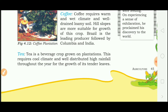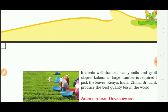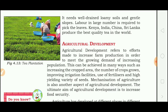Tea is a beverage crop grown on plantation. In India, Assam is famous for tea plantation. Tea requires a cool climate and well-distributed high rainfall throughout the year for the growth of its tender leaves. A large amount of labor is required to pick the leaves.